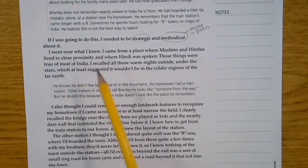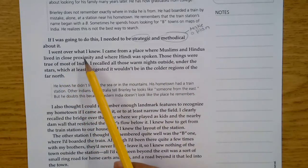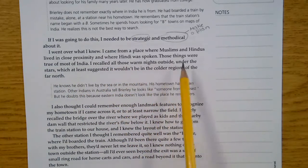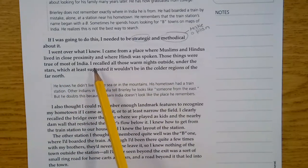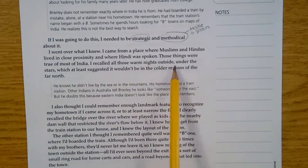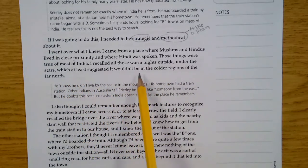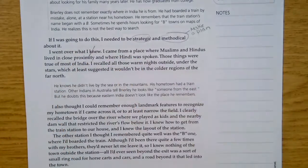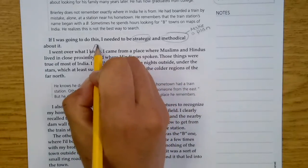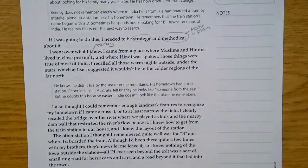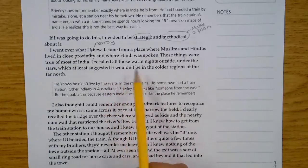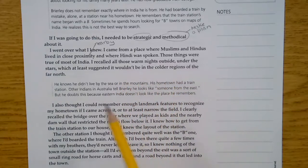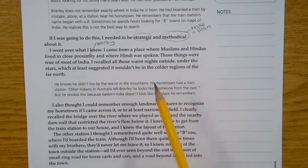I went over what I knew. I came from a place where Muslims and Hindus lived in close proximity, so that means they're close to it, and where Hindi was spoken. Those things were true of most of India. I recalled all of those warm nights outside under the stars, which at least suggested it wouldn't be in the colder regions of the far north. So I'm just going to put a little line over here so I remember that proximity means that it's nearby. So he's kind of realizing he probably wasn't from the colder regions, so he wasn't from northern India. He was probably from somewhere else in India.